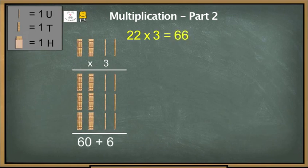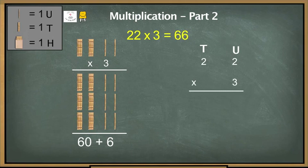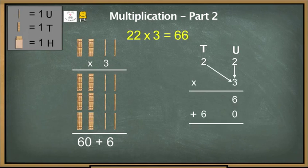Now let's look at this problem numerically. 22 is 2 tenths and 2 units, so we need to multiply 2 tenths and 2 units by 3. We saw that 2 units multiplied by 3 is 6, and 2 tenths multiplied by 3 is 60. That is why when we multiply 22 by 3 we get 6 plus 60, which is 66.